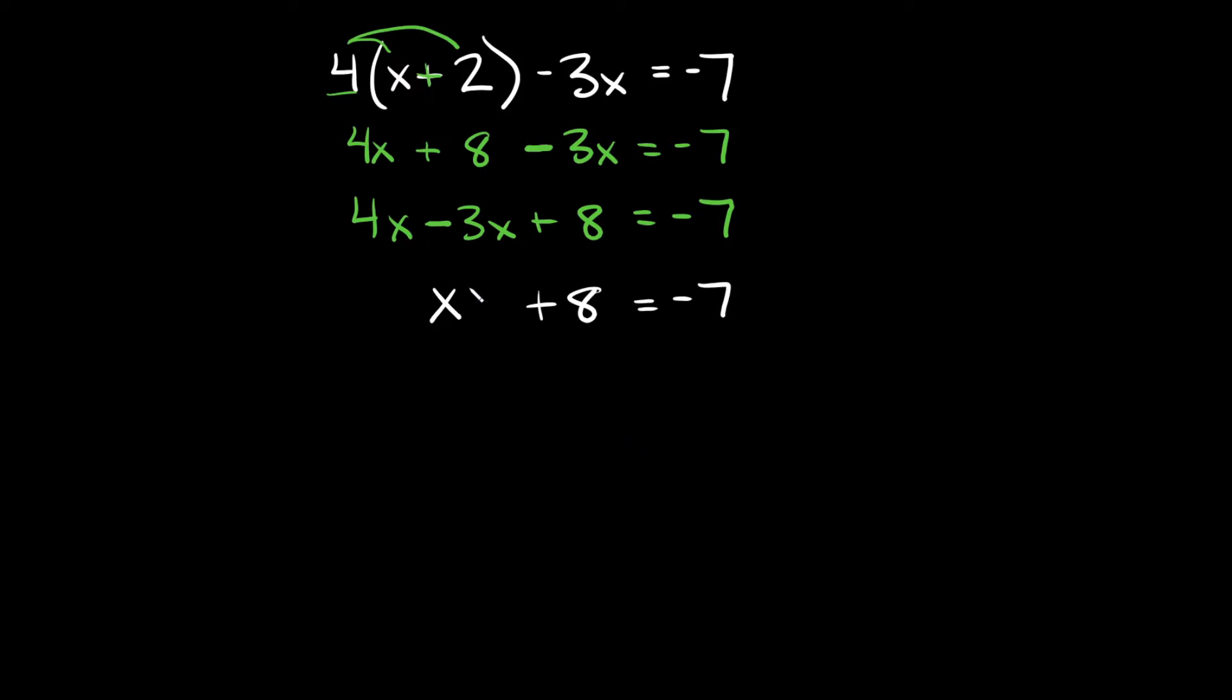So we're almost done here. All we have to do is get x by itself. So in order to get rid of this plus eight we're going to subtract eight. And remember what you do to one side of an equation you have to do to the other. So we're going to subtract by eight on this side also.